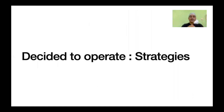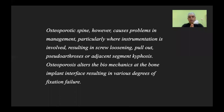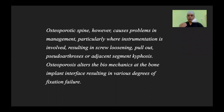Once you have decided to operate based on fracture morphology, the next question is how to implement strategies to improve fixation. Surgically, we either manage the patient's pain or stabilize and decompress the spine. The problem with osteoporosis is that osteoporotic bone causes problems with instrumentation, particularly resulting in screw loosening, pullout, pseudoarthrosis, or adjacent segment fibrosis. Osteoporosis alters the biomechanics of the bone-implant interface, resulting in various degrees of fixation failure.